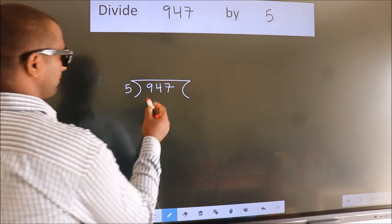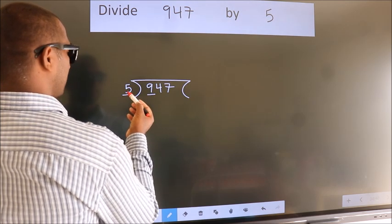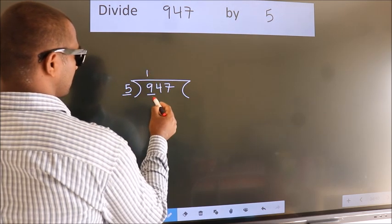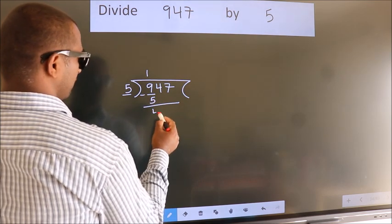Next, here we have 9, here 5. A number close to 9 in 5 table is 5 once 5. Now we should subtract. We get 4.